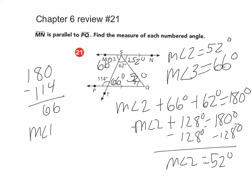So measure of angle 1 equals 52 degrees, measure of angle 2 equals 52 degrees, and the measure of angle 3 is 66 degrees.